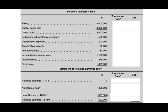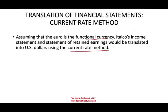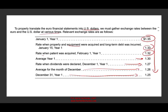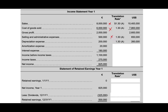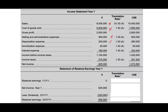Which rate do we use to translate the income statement? Under the current rate method, we use the average rate of $1.30. We assume that sales and expenses took place throughout the year, therefore we use the average. We take sales times the average rate, cost of goods sold times the average rate, giving us gross profit, then selling and administrative times the average rate, depreciation expense times the average rate, amortization expense, interest expense, income before taxes, income taxes — all at the average rate — to arrive at net income. Notice we used all average rates to translate the income statement.